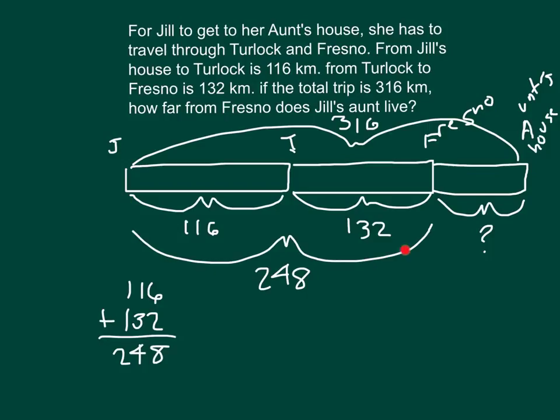Then it looks like, this is our second step, we have to work with 316 and 248, where we're comparing those two distances. 316 is the total distance, and part of that we are taking away is 248, that distance from Jill's house to Fresno.